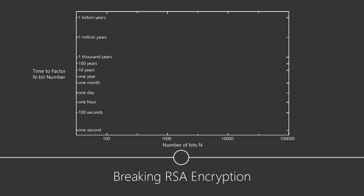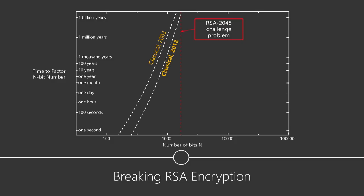Let me put some numbers against these application areas. Going back to RSA encryption: on this chart, the vertical axis shows time to factor an n-bit number, and the horizontal axis shows the number of bits. This is a log-log plot. Using the compute power we had in 2003, factoring a 2048-bit key was a problem that took longer than the lifetime of the universe. Fast forward to 2018 — with all the compute power increases over 15 years, I've only shifted the curve slightly to the right — it's now down to a mere billion years.